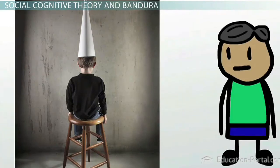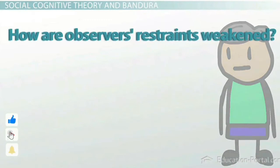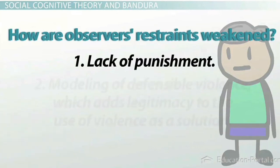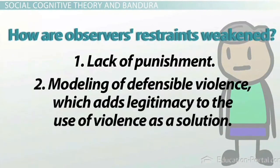In contrast, observers' restraints are weakened in one of two ways. One is lack of punishment for reprehensible behaviors. The other is the modeling of defensible violence, which adds legitimacy to the use of violence as a solution to a problem. Unfortunately, we see violence daily on TV and media, which may lead to weakening the observer's behavioral restraints toward violent behavior.